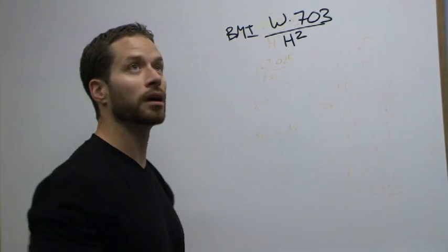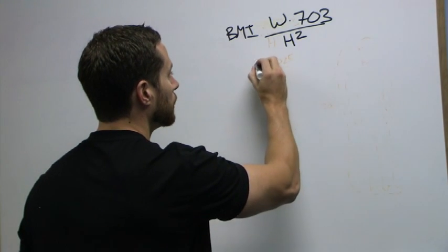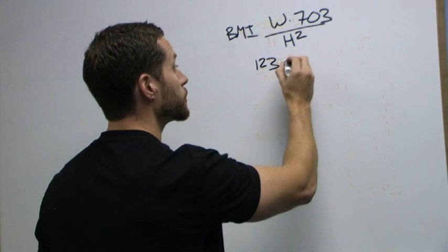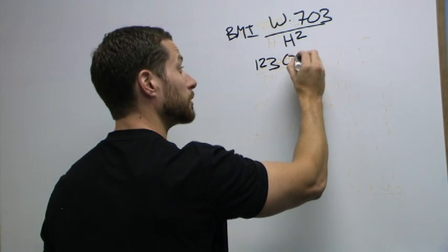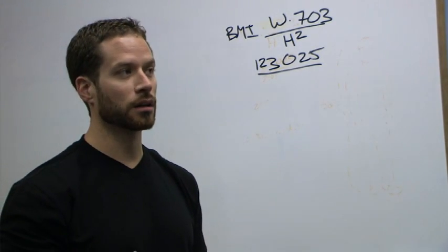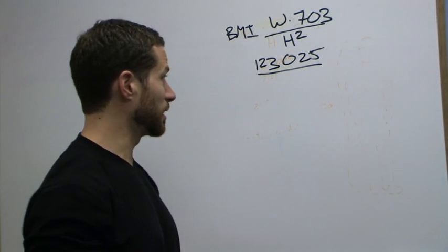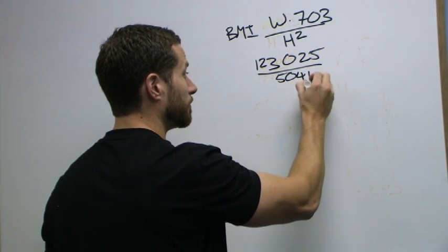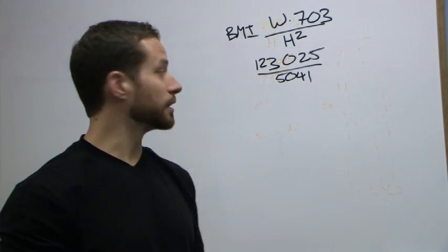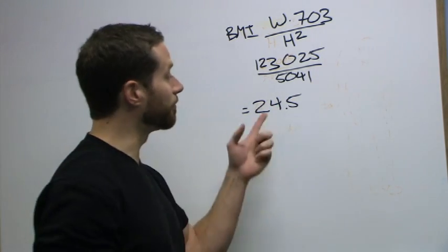For me, I'm 175 pounds, so times 703 is 123,025, and we divide that by my height squared, which would be 71 inches or 5,041. So if you do that math, my body mass index is about 24.5.